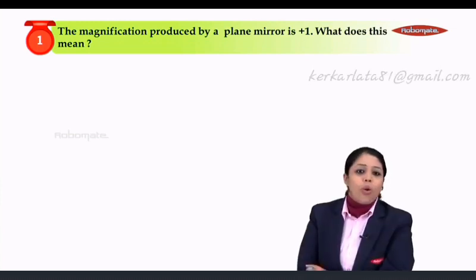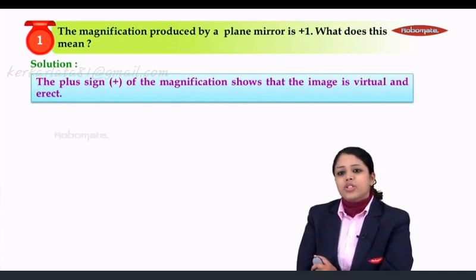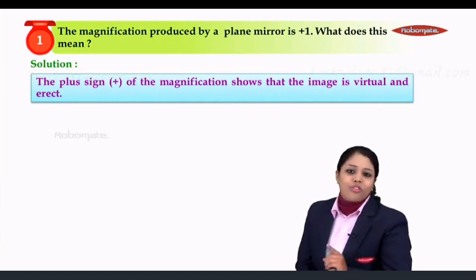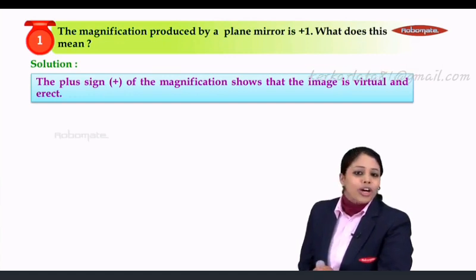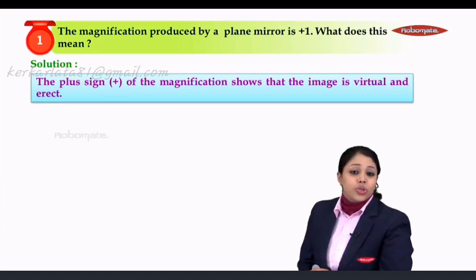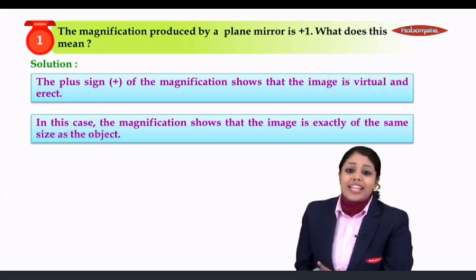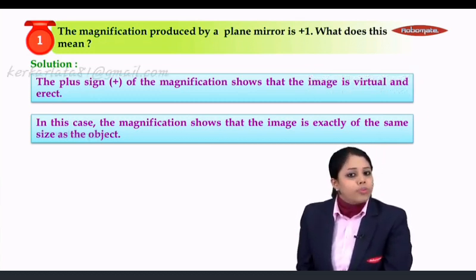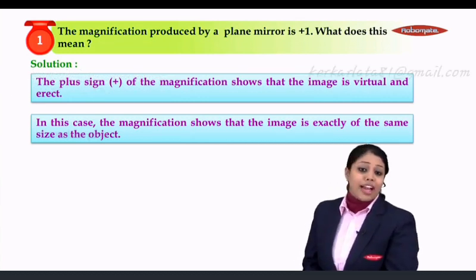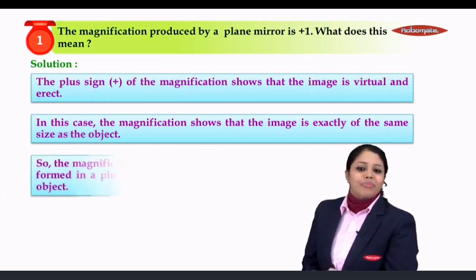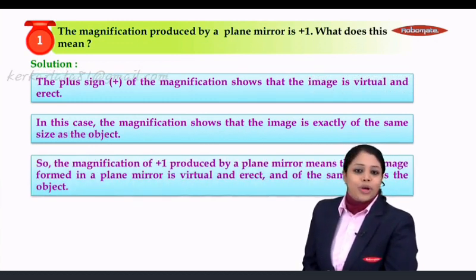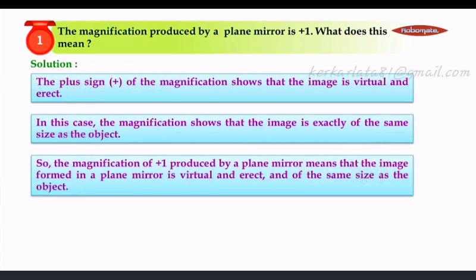So there are three conditions. Let us move on to the first numerical. It says the magnification produced by a plane mirror is plus 1 — what does this mean? The plus sign of the magnification shows that the image is virtual and erect. The magnification value of 1 shows that the image is exactly of the same size as the object. So magnification of plus 1 produced by a plane mirror means the image formed is virtual, erect, and of the same size as the object.